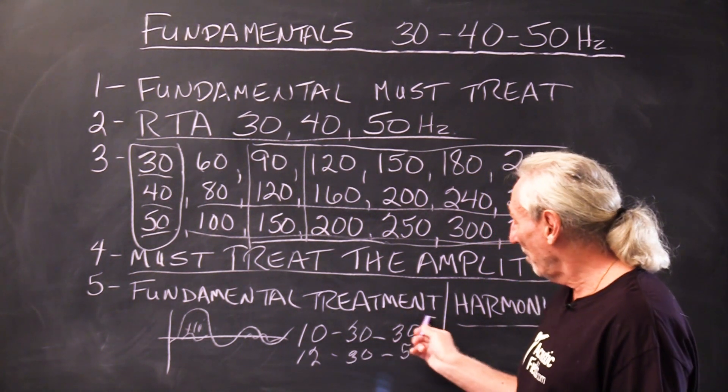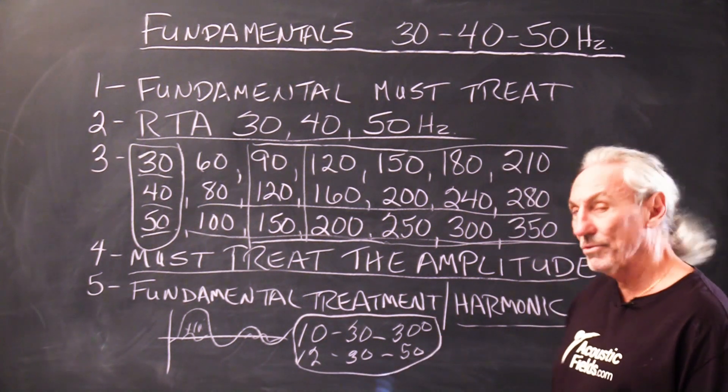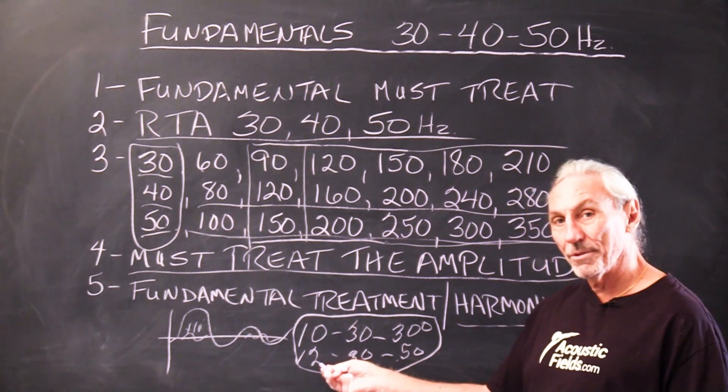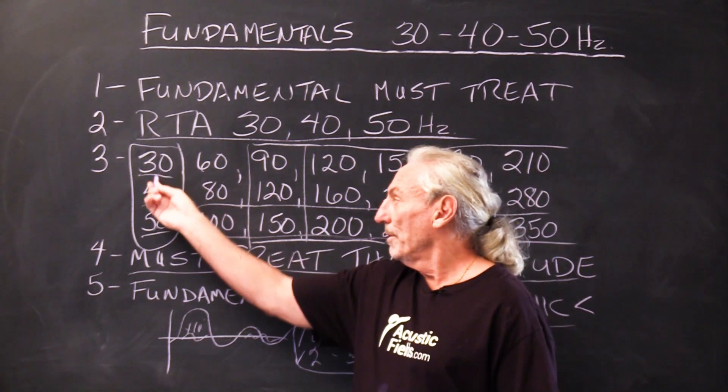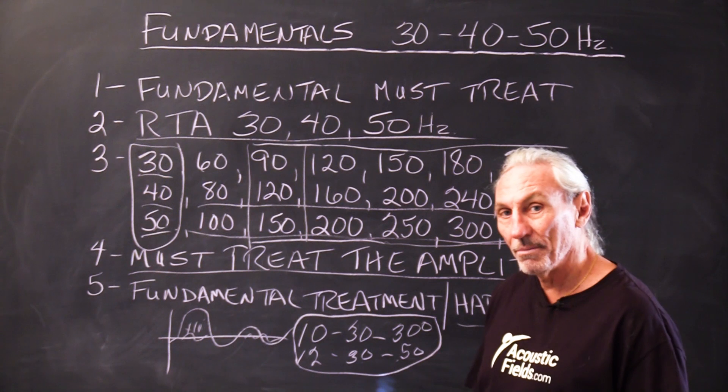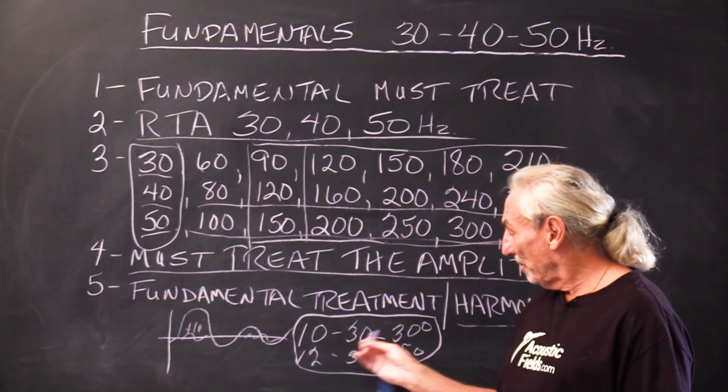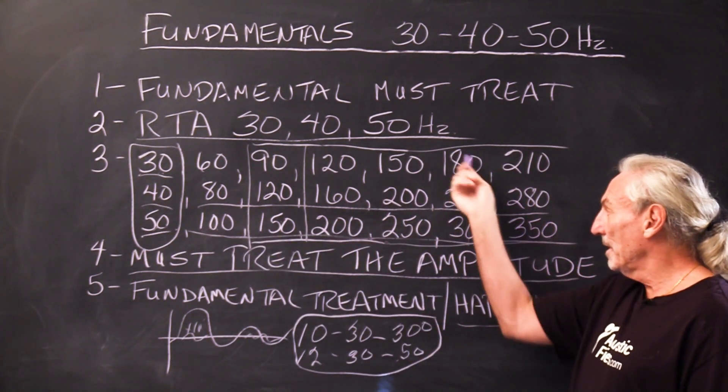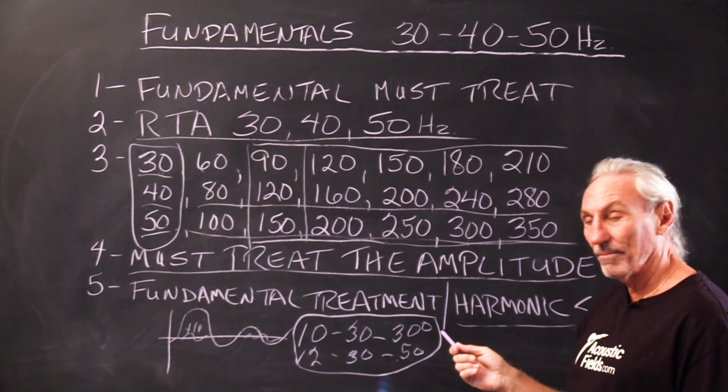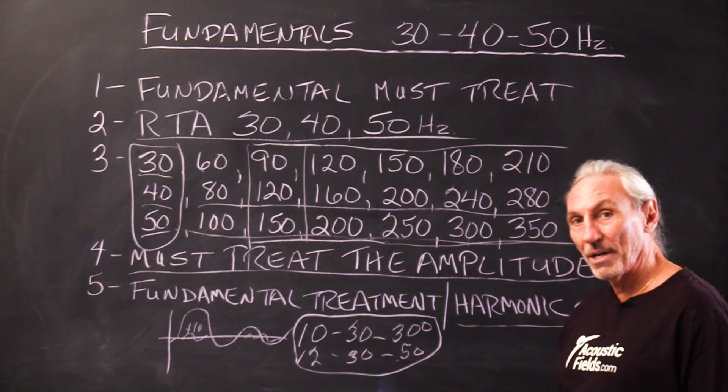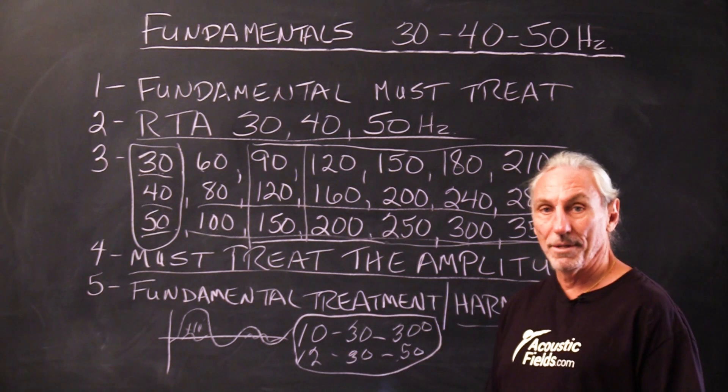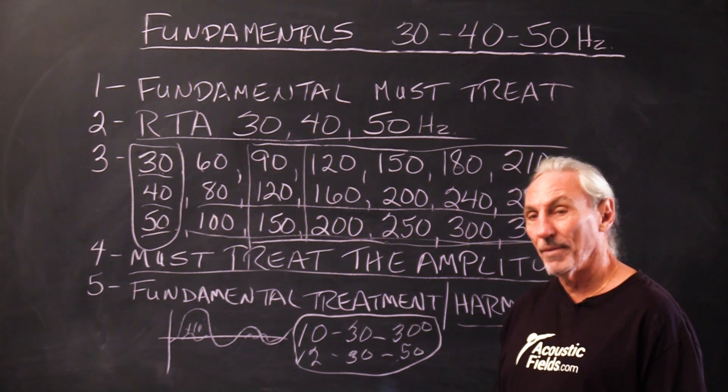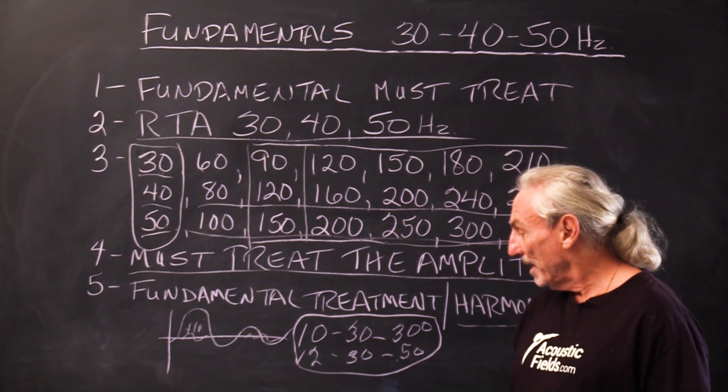So you can see right away why I created those two technologies when you look at these numbers. 30, 40, 50 for the starting fundamental problem, and then the 10 - 30 to 300. You see why that's occurring. So you can understand the design parameters I used to go after the fundamentals. If we go after the fundamentals, it's easier to treat the harmonics. And that's why we have the two technologies to do that.